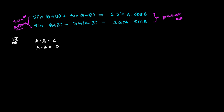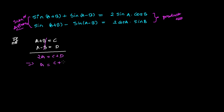We're supposing if a plus b equals to c and a minus b equals to d. Then if we add these two equations, the b terms will cancel and we'll get twice of a equals to c plus d. So our a is going to be (c plus d) over 2.